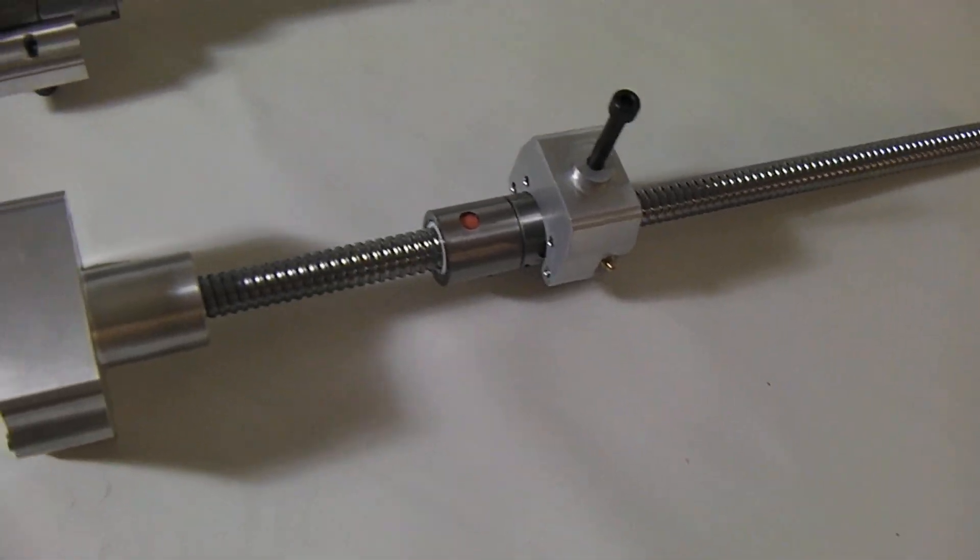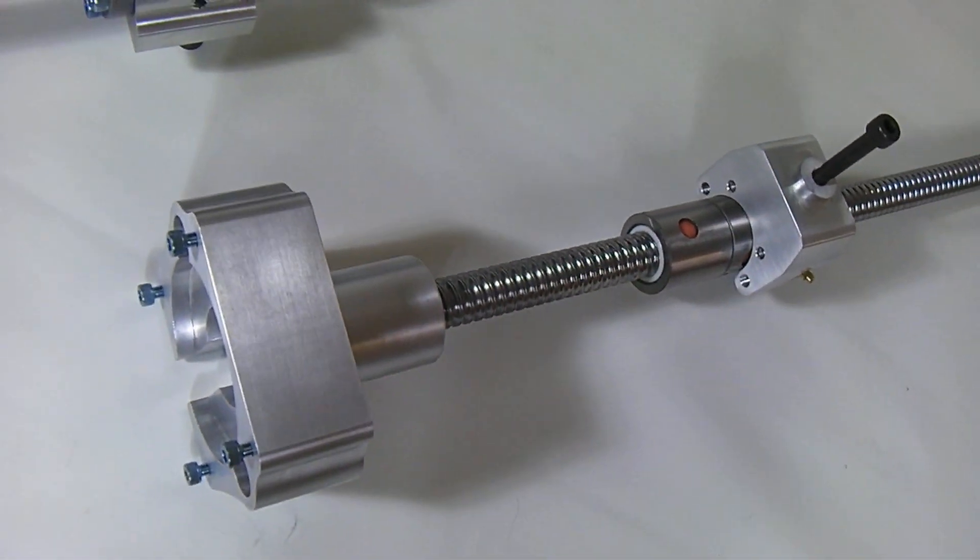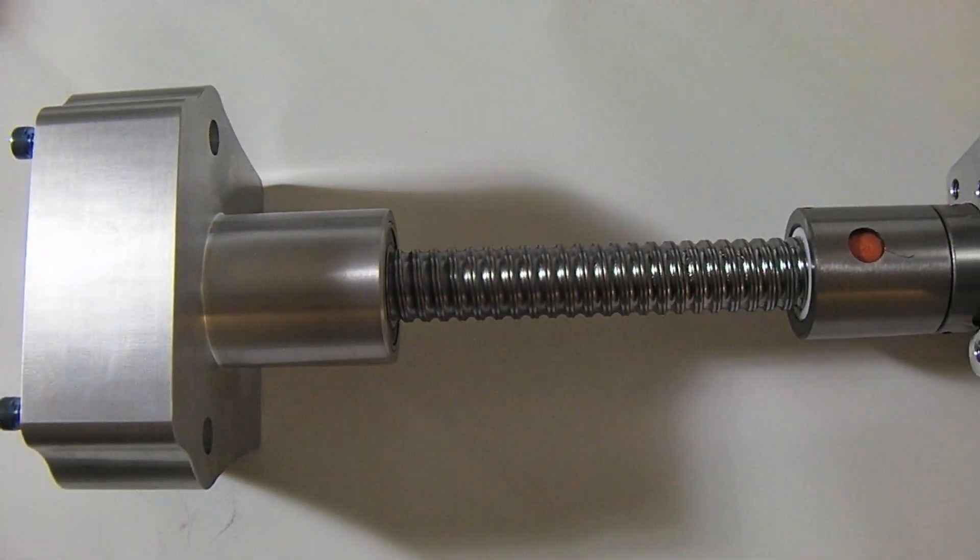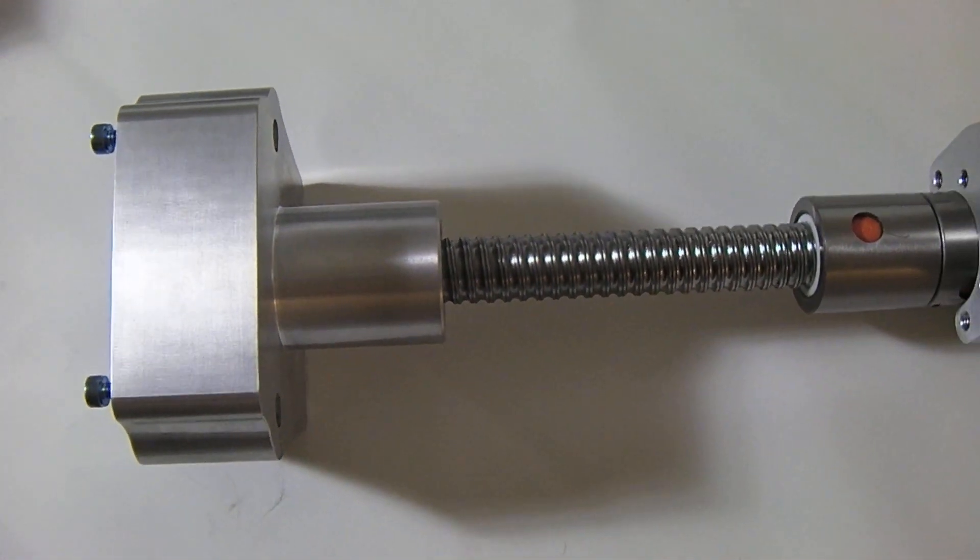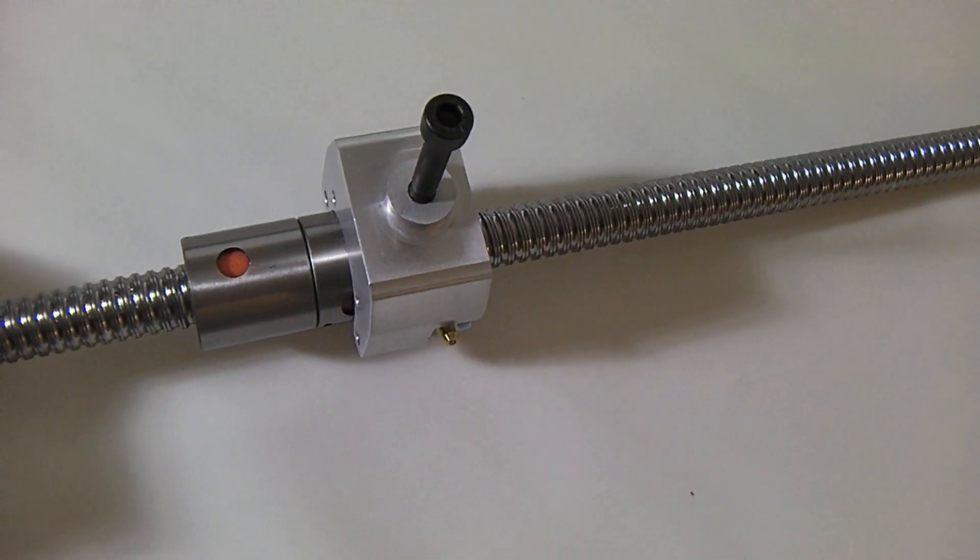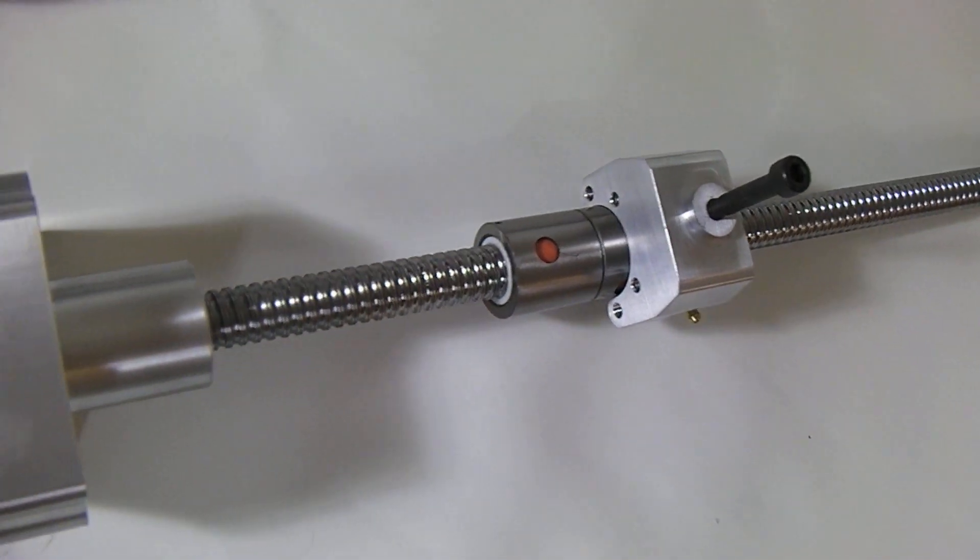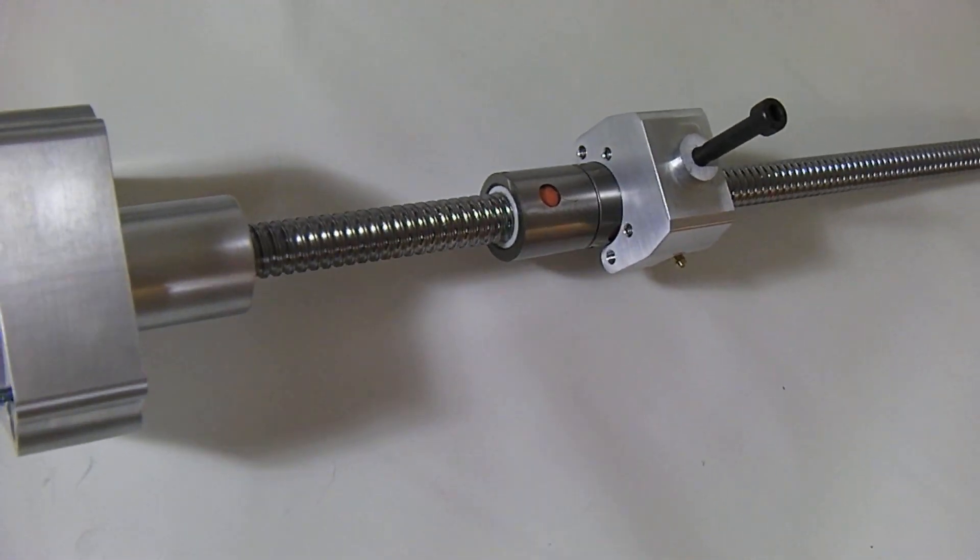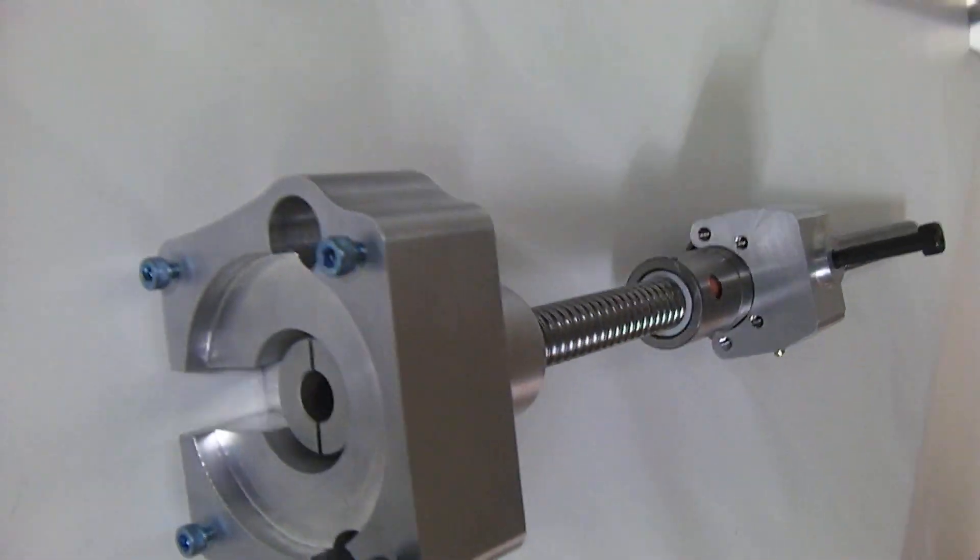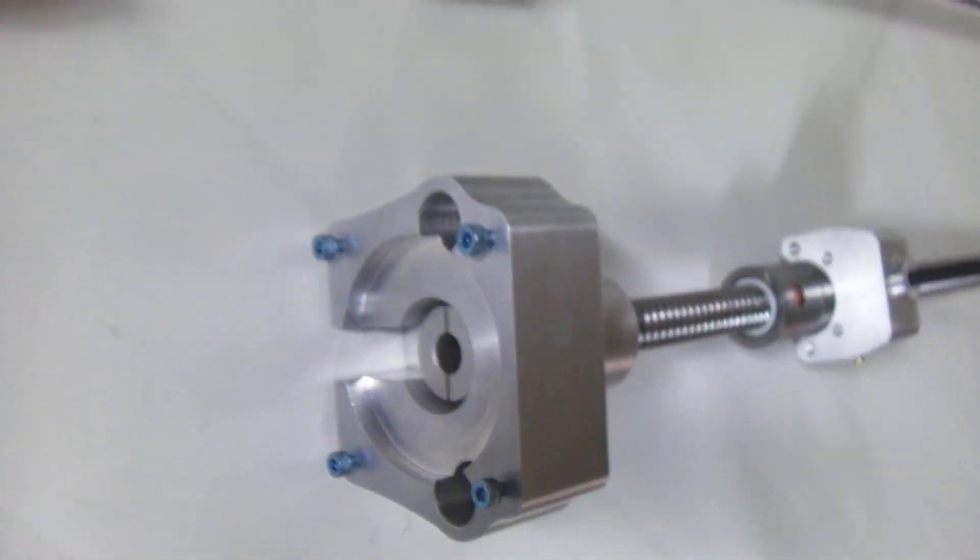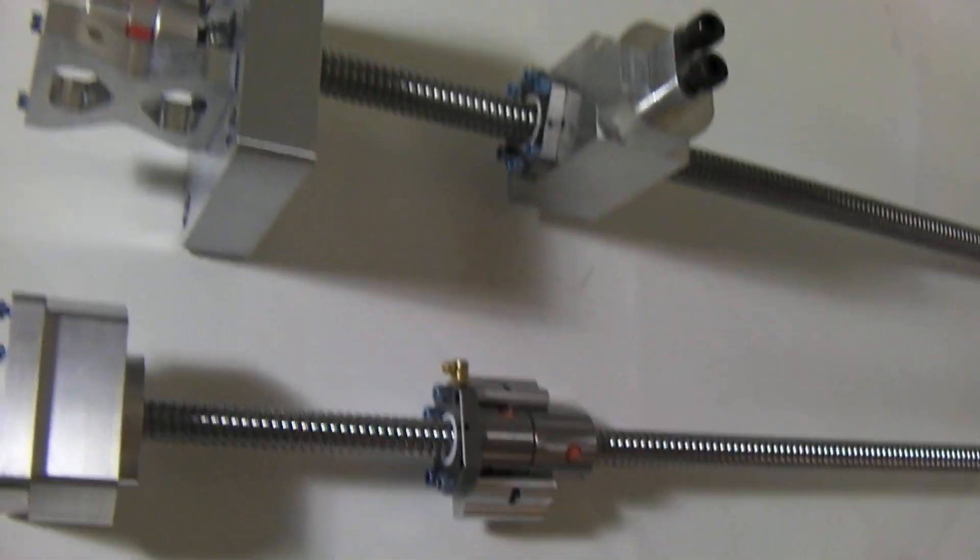This is the Y mount. It has recessed angular contact bearings which makes it for low stick out. It also has a reworked 20 millimeter C7 ball screw. Again, it comes with a half inch 30 millimeter coupler.